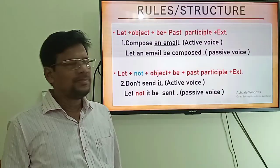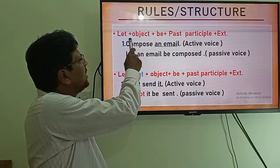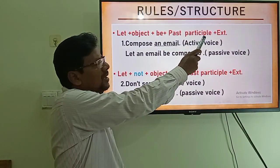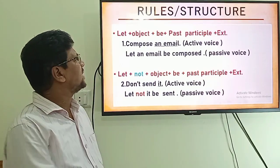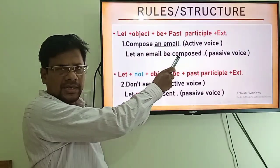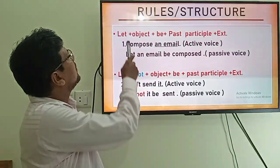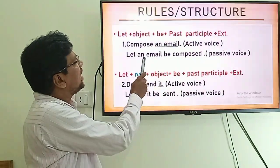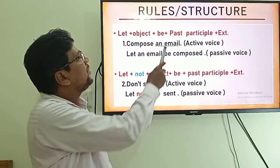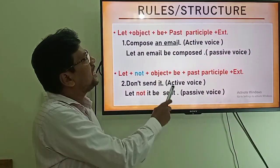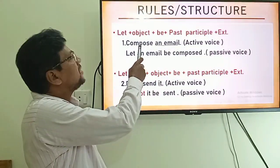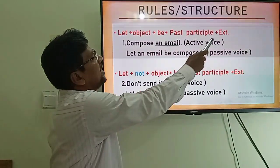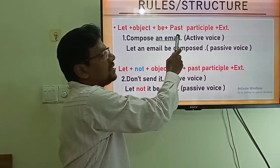Now different rules will be described. The first rule for changing active to passive voice: Let + object + be + past participle (PP) + extension (if any). For example, 'Compose an email' is active voice. Passive: Let + object 'an email' + be + past participle 'composed'. There is no extension in this sentence.